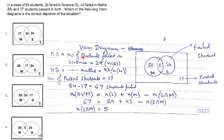This is a Venn diagram problem. In a class of 84 students, 29 failed in science, 43 failed in maths, and 17 students passed in both. Remember that these 17 students passed in both — this is a key distinction from the 29 and 43 students who failed. We have to find the Venn diagram that best represents this data.